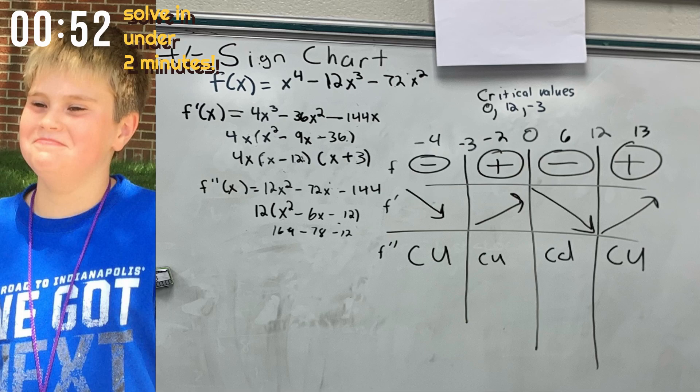And lastly, for the value of 13, the slope is increasing, but it is also concave down. And by using the Sine Chart, you can tell that the critical values are 0, 12, and negative 3.